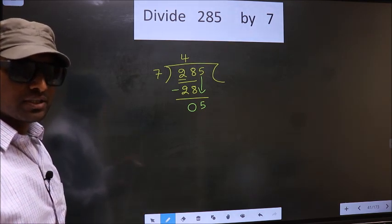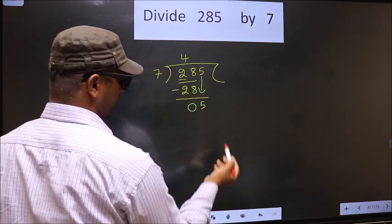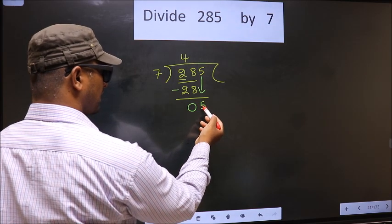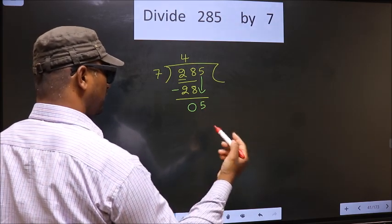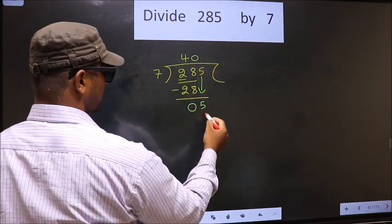Instead, what you should think of is, what number should we write here? If we write 7 here, that is larger than 5. So what we do is, we take 0 here. So 7 into 0, 0.